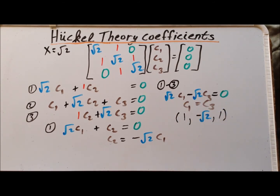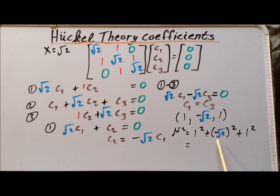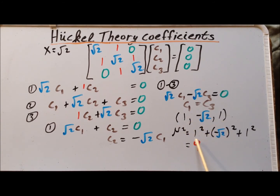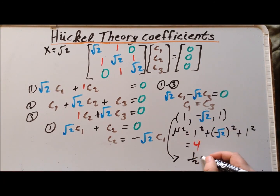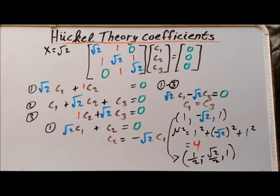These coefficients are not yet normalized, so we perform our normalization procedure. We square each coefficient and add them: 1 squared plus minus root 2 squared plus 1 squared equals 1 plus 2 plus 1 equals 4. We take the square root of 4, which is 2, and divide each coefficient by 2. The normalized coefficients for the eigenvalue x equals square root of 2 are: c1 equals one half, c2 equals minus root 2 over 2, and c3 equals one half.